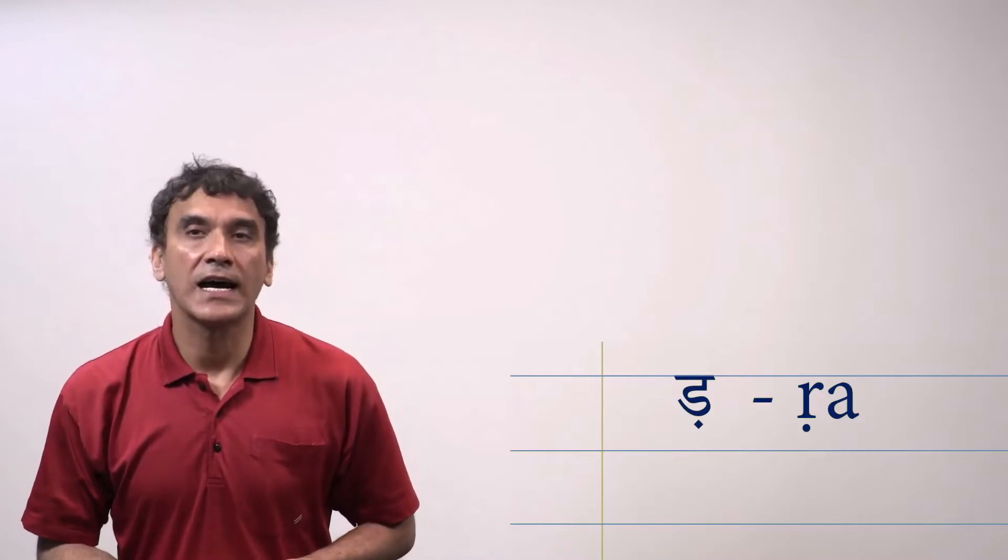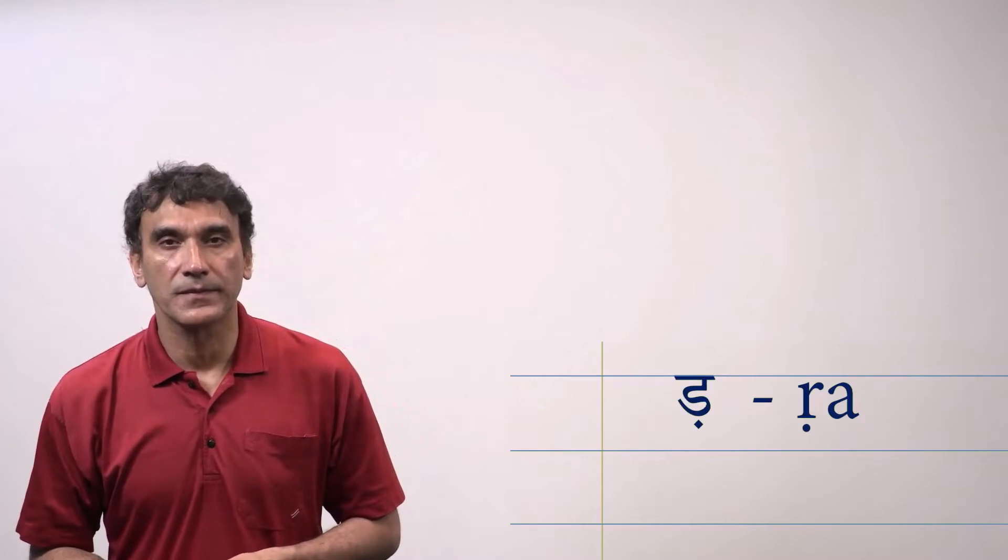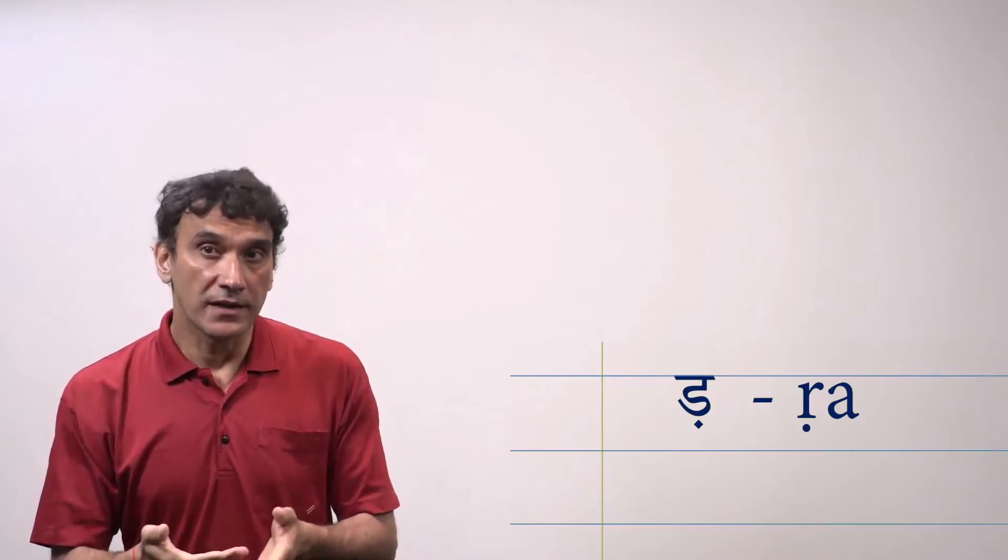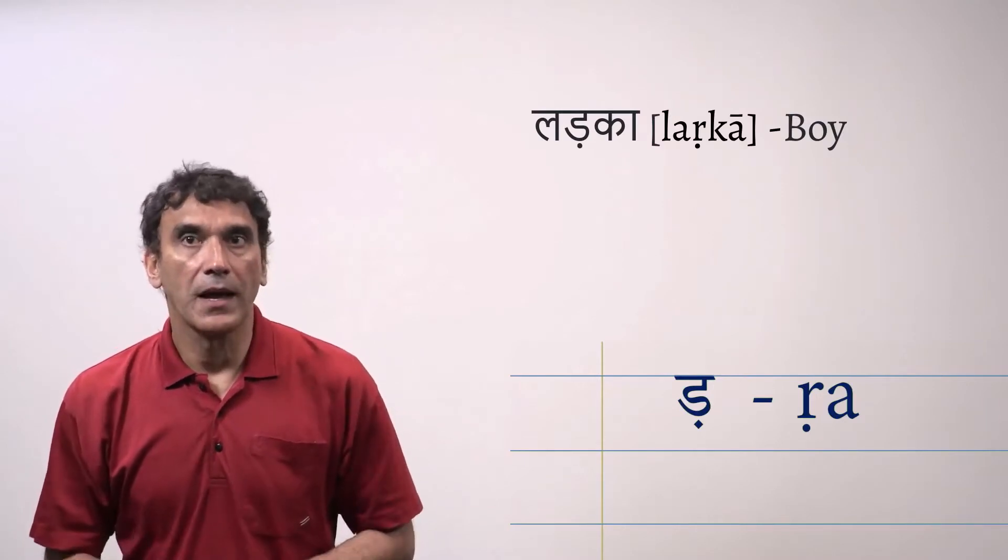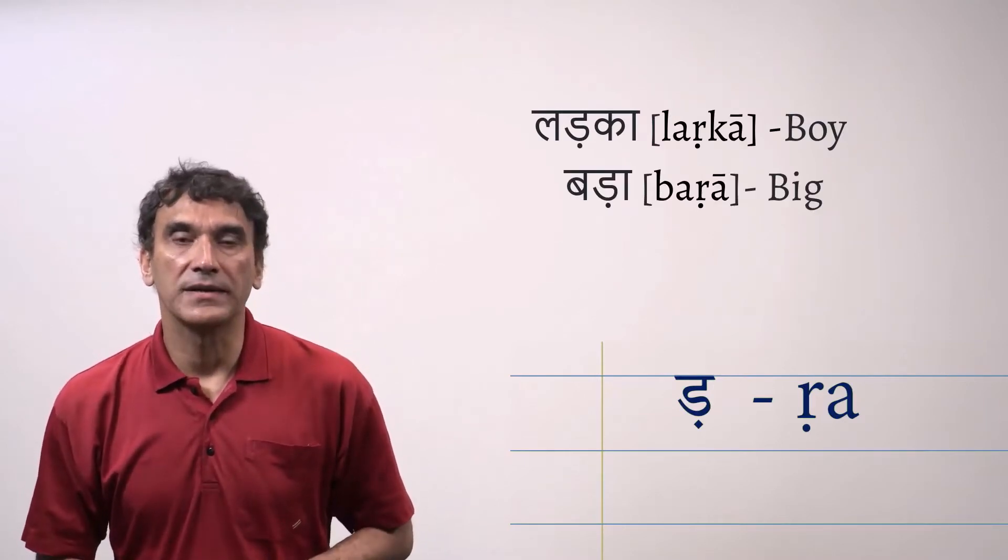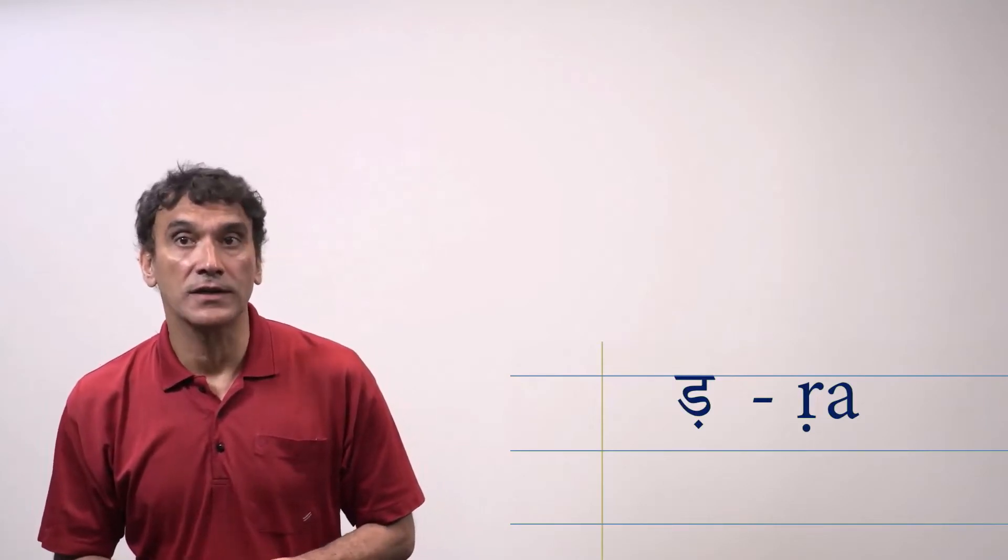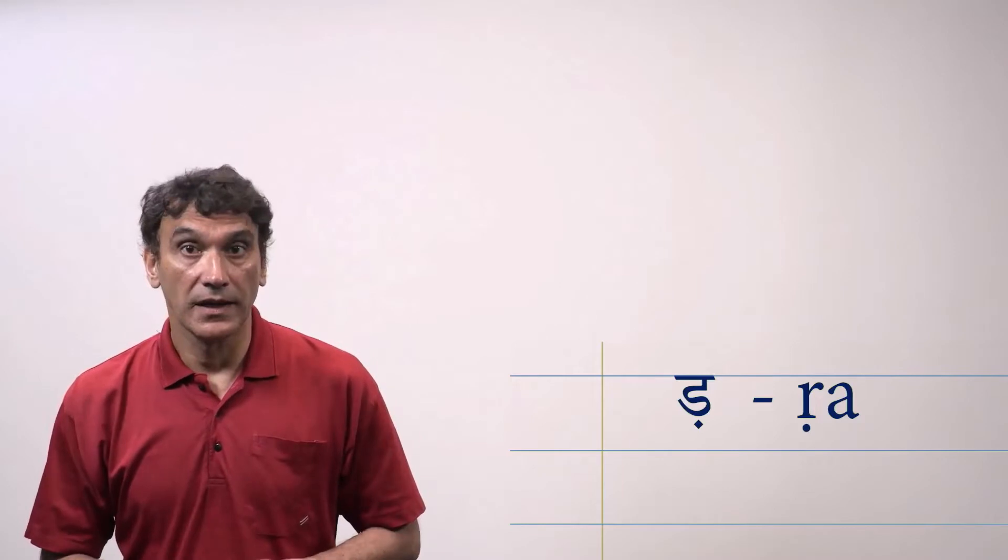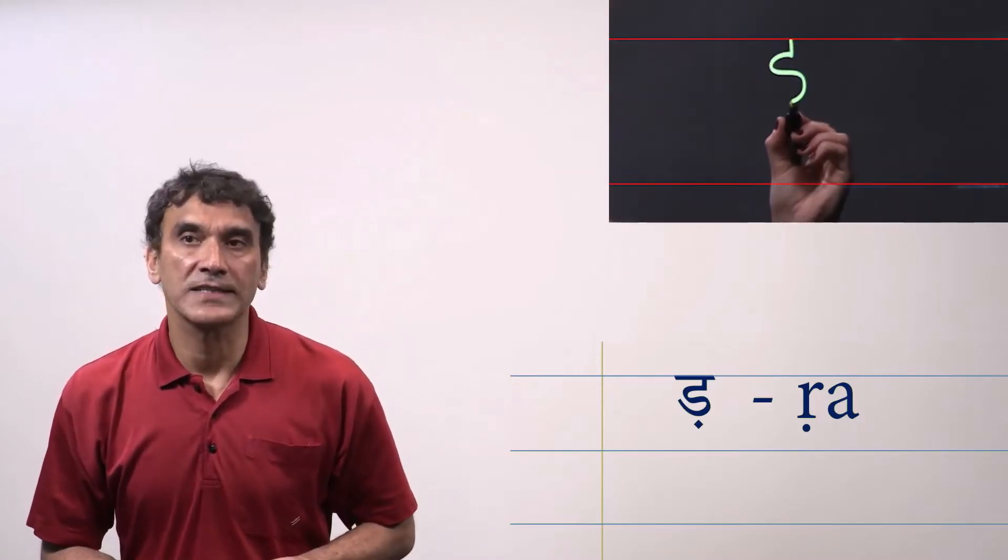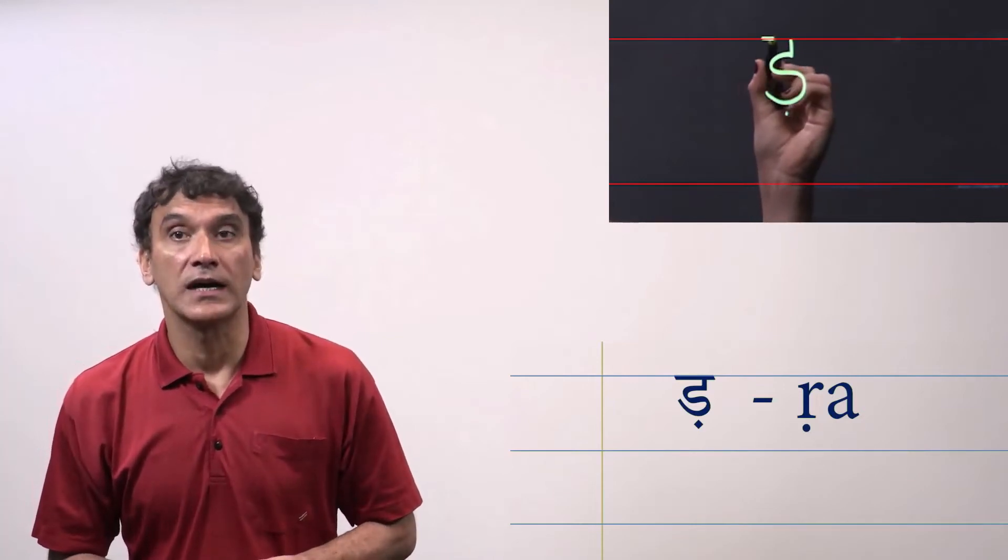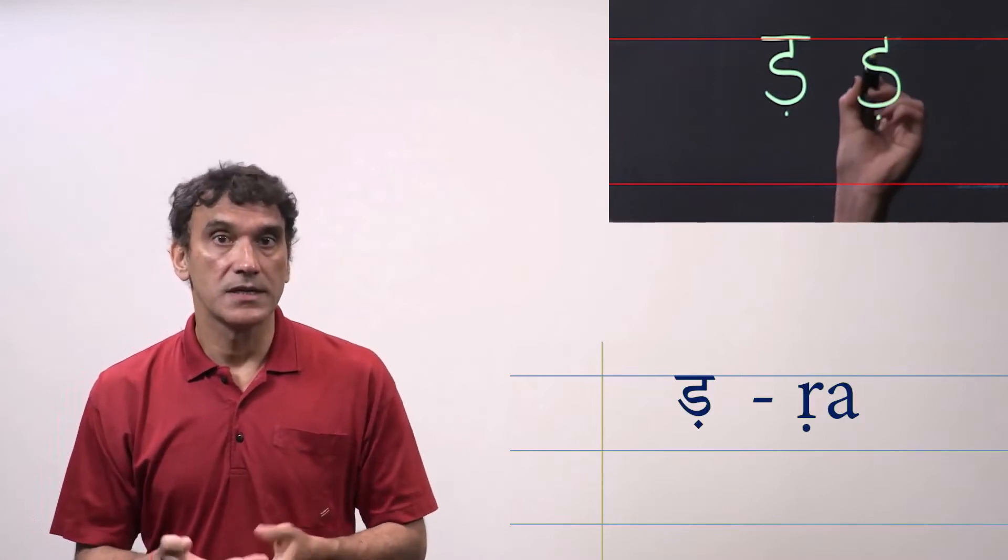This sound is hard to produce in isolation. That's why it never comes in the beginning of a word. The sound is R and it comes in many Hindi words such as Ladka meaning boy, Bada meaning big. It is transliterated into Roman as RA with a dot under the letter R. And here you can see how it is handwritten. It is written as the retroflex voiced D with the Nukta under the consonant R. So keep in mind the sound is R, R.